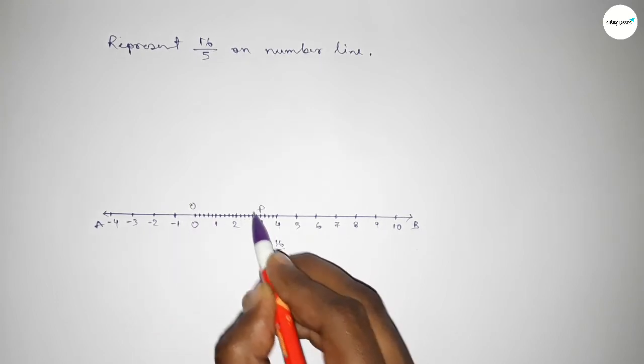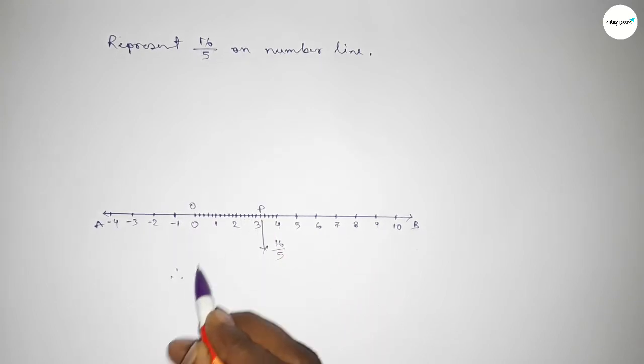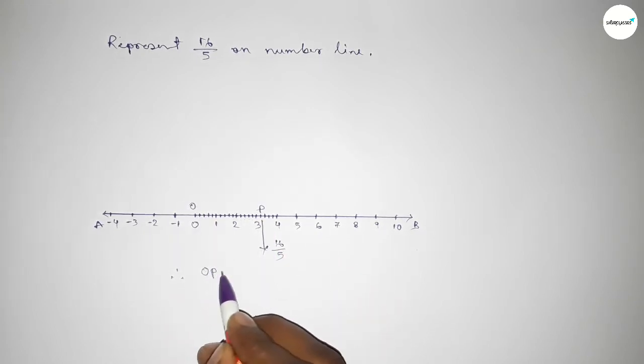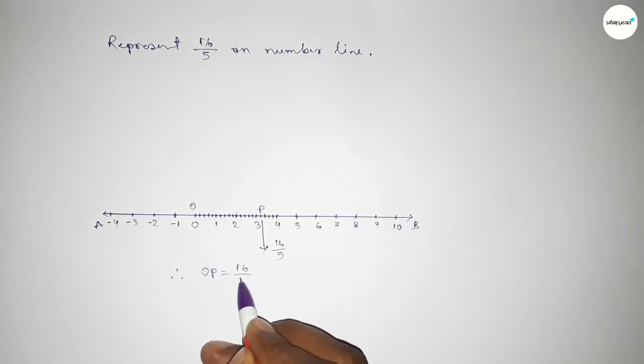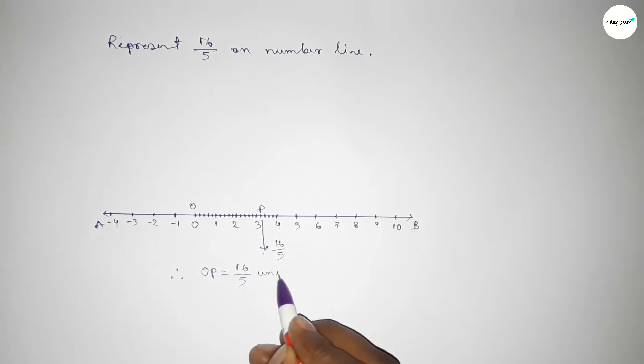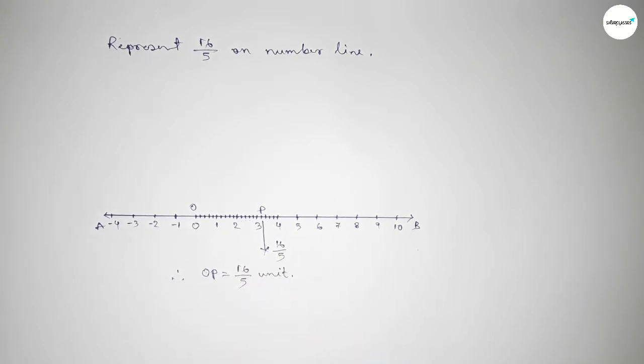Taking here O and P, therefore OP equals 16 over 5 units. That's all. Thanks for watching. If this video is helpful to you, then please share.